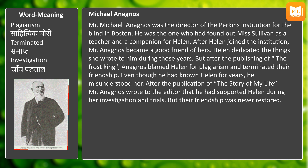Mr. Michael Anagos was the director of the Perkins Institution for the Blind in Boston. He was the one who found Miss Sullivan as a teacher and companion for Helen. After Helen joined the institution, Mr. Anagos became a good friend of hers, and Helen dedicated the things she wrote to him during those years. However, after the publishing of 'The Frost King,' Anagos blamed Helen for plagiarism and terminated their friendship, even though he had known Helen for years. After the publishing of 'The Story of My Life,' Mr. Anagos wrote to the editor that he had supported Helen during her investigation, but their friendship was never restored.